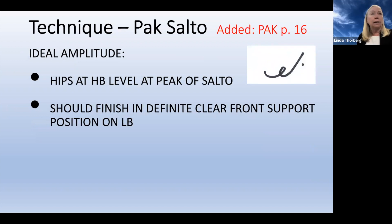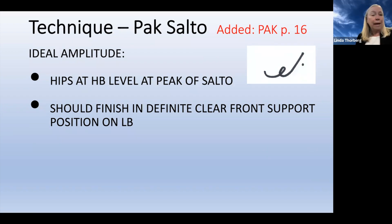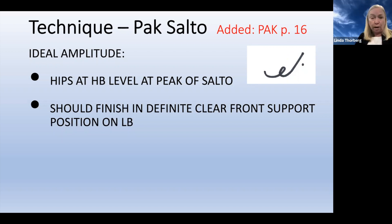We see a lot of pack saltos now, often in combination with other high-level skills. In a pack salto, gymnasts should be showing their hips at the level of the high bar at the peak of their salto — there's up to two-tenths deduction for amplitude on release skills. We're also looking for them to finish in a definite clear front support position on the low bar: shoulders over hands, hips above shoulders. If her shoulders are way behind the bar, she won't be able to do anything but kip, and there would be a deduction for not finishing in that clear support position.